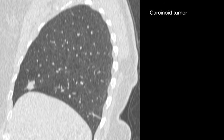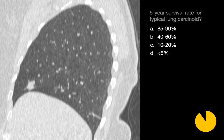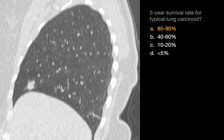This case turned out to be a carcinoid tumor. What's the 5-year survival rate for people who've been treated for typical lung carcinoid? The 5-year survival rate for typical lung carcinoid is around 85-90%. However, the 5-year survival rate for atypical lung carcinoid is about 50-60%. Typical carcinoids grow slowly and rarely metastasize and make up around 90% of lung carcinoids. Atypical lung carcinoids are much more rare, but grow faster and are more likely to metastasize.